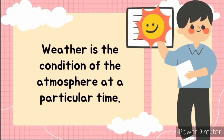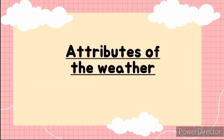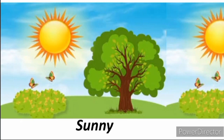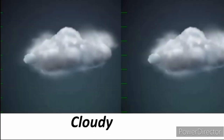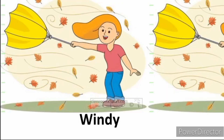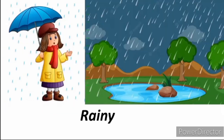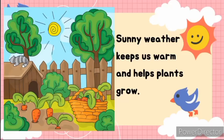So what are the attributes of weather? It can be sunny, it could be cloudy, it could be windy — when the breeze is blowing so much — or it could also be rainy. So the four major attributes of weather are sunny, cloudy, windy, and rainy.